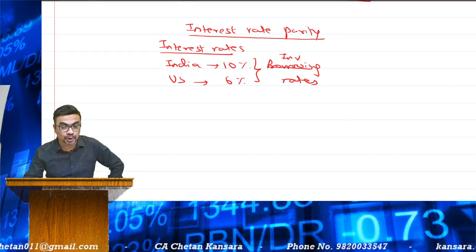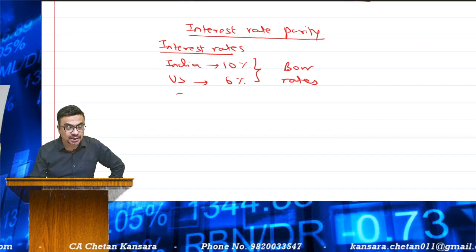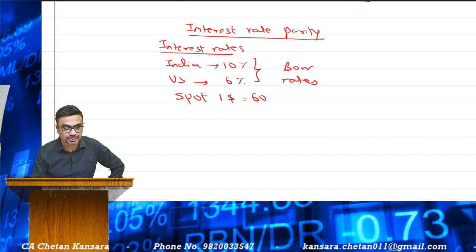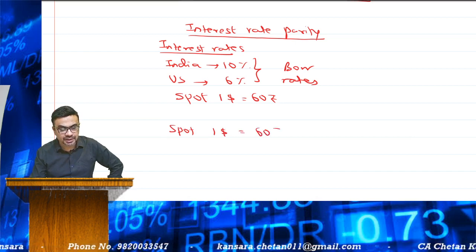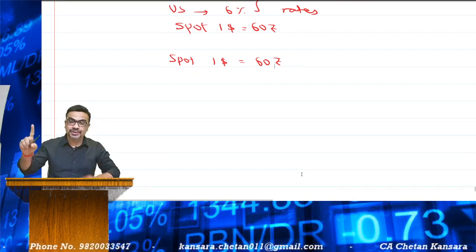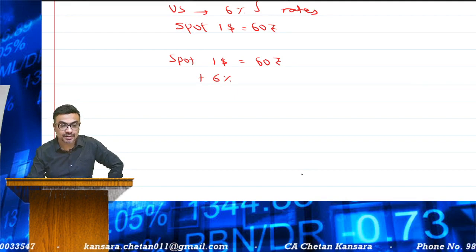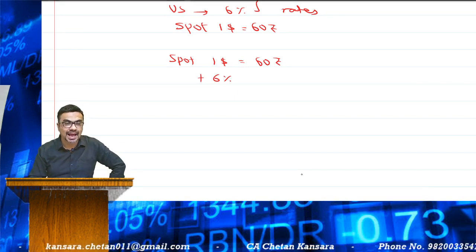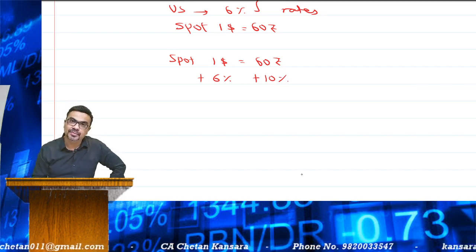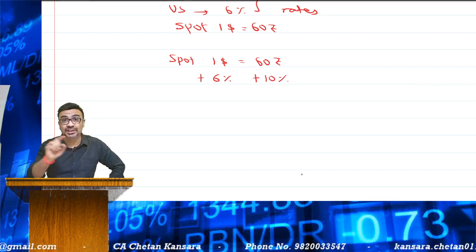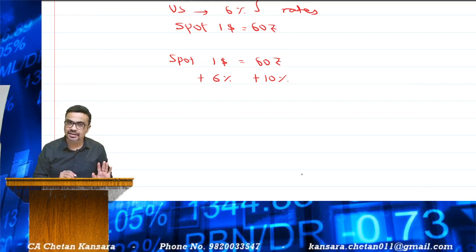Let us take borrowing rates and proceed with this example. These are borrowing rates. Today the spot rate is $1 = 60 rupees. Suppose a person in US borrows in US - the rate of interest is 6%, so he pays 6% on $1. A person in India is borrowing 60 rupees and paying 10%. They are borrowing the same equivalent amount today, because $1 is 60 rupees.